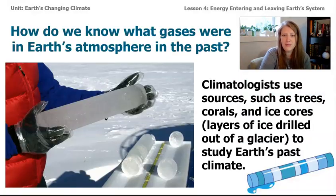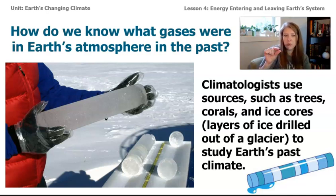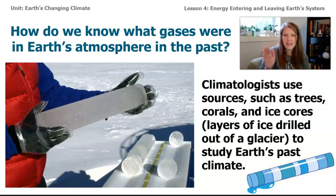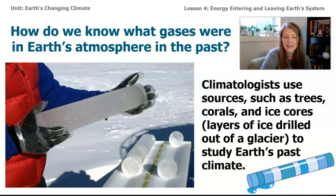Let me introduce you to some of the ways that climatologists study Earth's atmosphere in the past, because you might wonder: how do we know what the atmosphere was like 100 years ago when we didn't have the same technology? Climatologists use sources such as trees — you can drill a little hole in a tree, pull out a core of wood, and look at the different rings. You can do the same thing with glaciers. Cores of ice have layers, and each layer contains bubbles of air and gas from when that layer was formed. So you can count through the layers and see what type of gas was in the atmosphere at that time. They can look at the amount of carbon dioxide, sulfur dioxide, and methane, as well as other gases in our atmosphere.